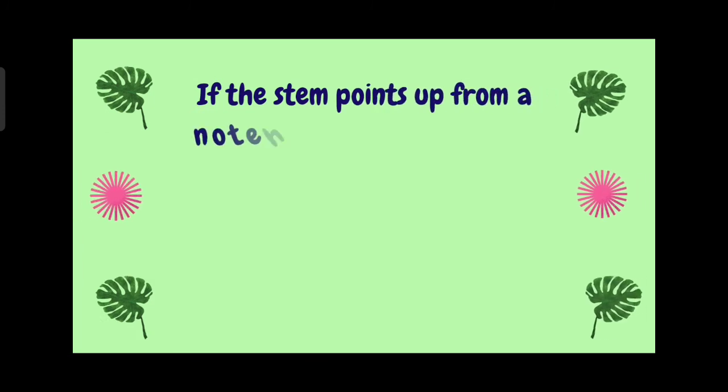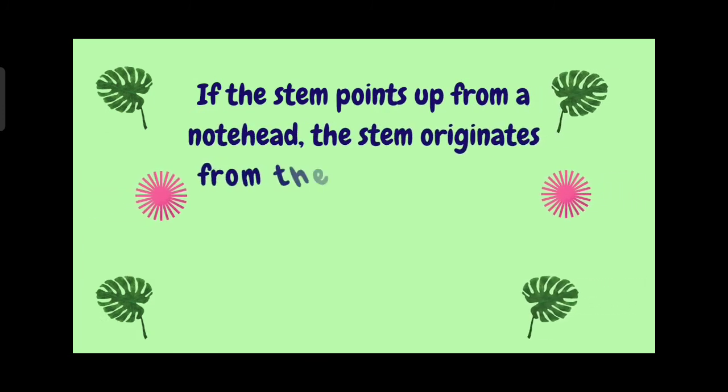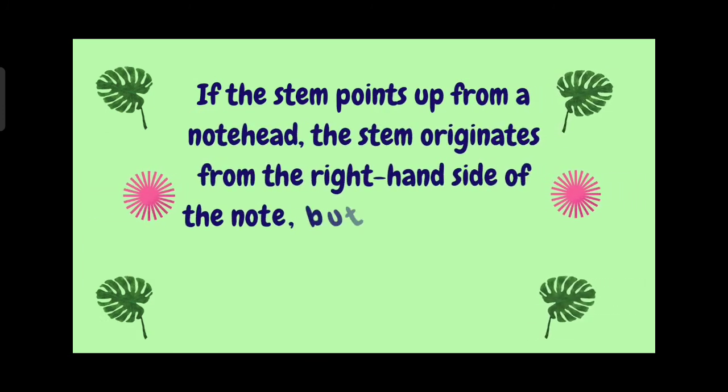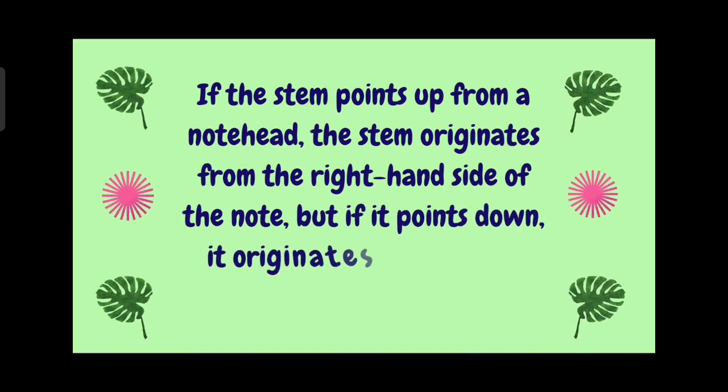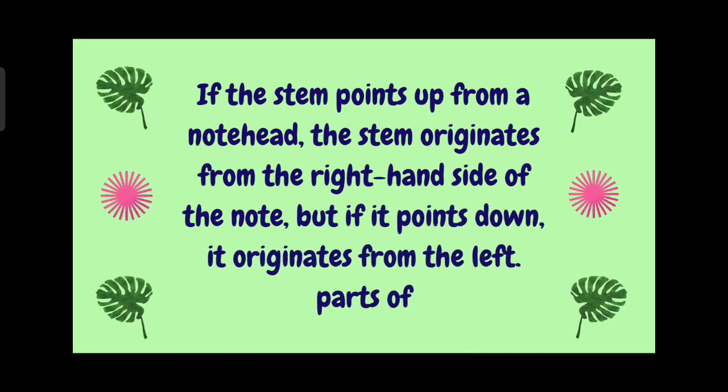When it is on line three, you can take your stem up or down, but once it passes line three they come down, and once it is below line three it's facing upward. If the stem points up from a note head, the stem originates from the right hand side of the note. But if it points down, it originates from the left part of the note. When it's going upward, it goes to the right side of the note head, but once it is coming downward, it must come to the left side. Don't make that mistake.